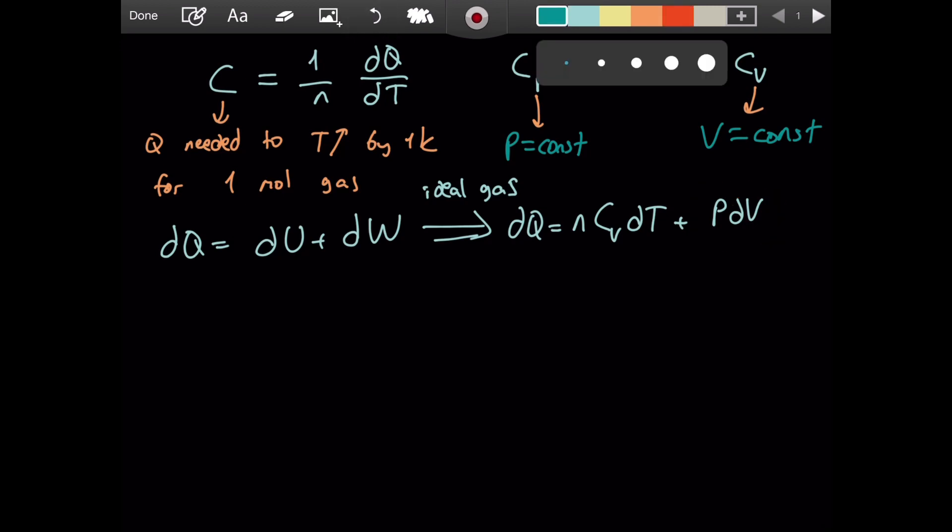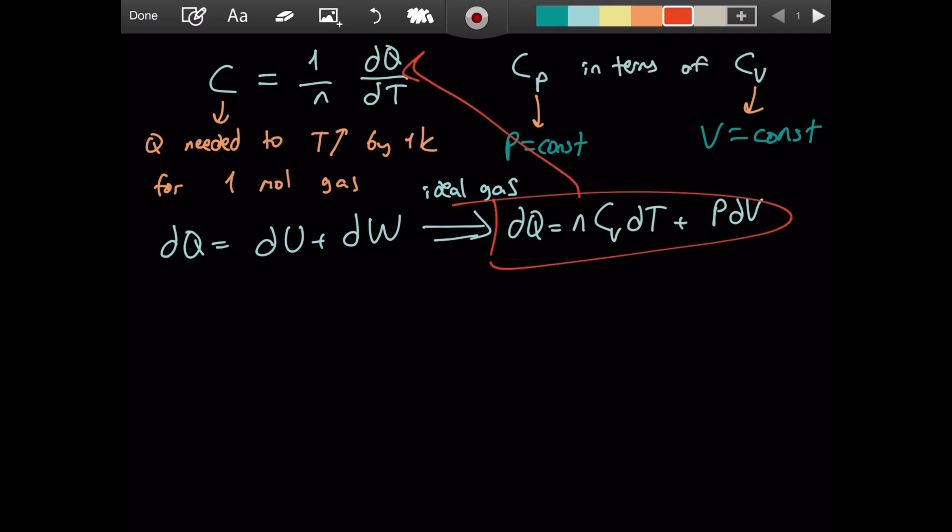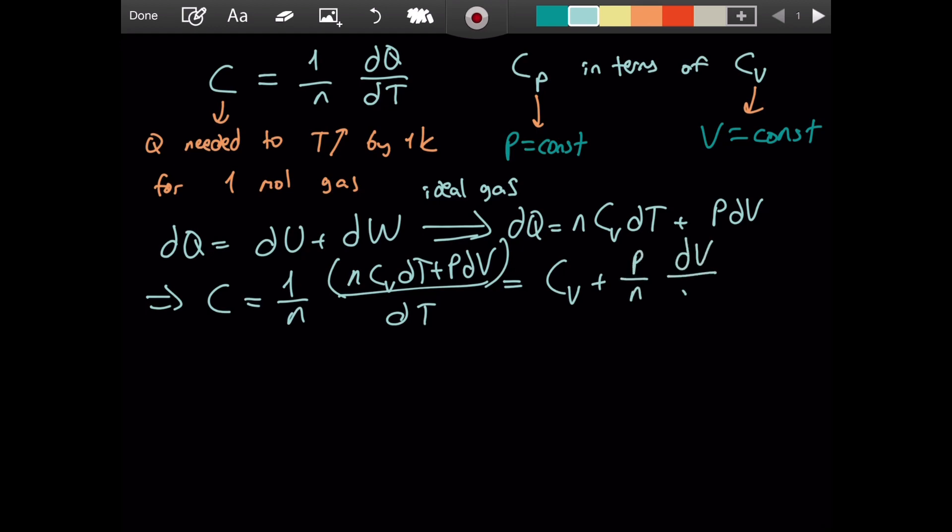So, I mean, at this point, I guess there is one thing that we can do. That is, take this, put it here. So C is 1 over n. For dq, I will write this. So it is nCv dt plus pdv. Don't forget to divide by dt. And so, if we distribute this 1 over n as well, we're going to have Cv plus p over n dv by dt.